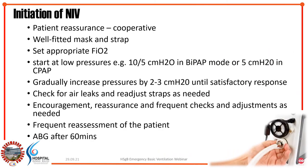Once you decide to put a patient on NIV, explain the procedure and provide reassurance so the patient is cooperative. Choose the right size mask with a good seal to avoid air leakage. Set the appropriate FiO2 — usually start at FiO2 of 1.0 and taper down later. Start at lower pressure so the patient can tolerate it, then titrate up gradually until satisfactory response is achieved. Check for leaks and adjust the strap as needed. Monitor the patient closely, and obtain an ABG after 60 minutes to evaluate treatment success.